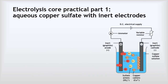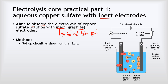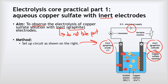Now we're back to the foundation tier material looking at the core practical. Part one was the electrolysis of aqueous copper sulfate with inert electrodes. The aim was simply to observe the electrolysis of copper sulfate solution using inert graphite electrodes — inert meaning the electrodes do not take part in any chemical reaction, they just carry the current into the electrolyte. The setup was a graphite anode, a graphite cathode, a direct current electrical supply, and copper sulfate solution as the electrolyte.